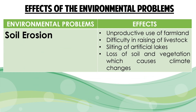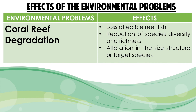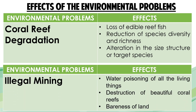The effects of soil erosion are unproductive use of farmland, difficulty in raising livestock, silting of artificial lakes, and loss of soil and vegetation which causes climate changes. The effects of oil spill are suffocation of marine mammals and death of trees from oil in roots. The effects of coral reef degradation are loss of edible reef fish, reduction of species diversity and richness, and alteration in the size structure of target species. The effects of illegal mining are water poisoning of all living things, destruction of coral reefs, and bareness of land.